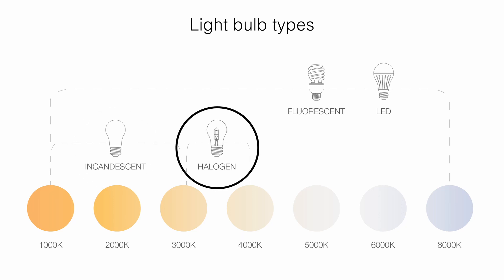Halogen light bulbs are a different type of incandescent with a similar lifespan. Halogen bulbs give off a bright white color closer to daylight than standard incandescent style. Their color usually ranges from a warm cozy glow towards a more neutral, white, clean color.